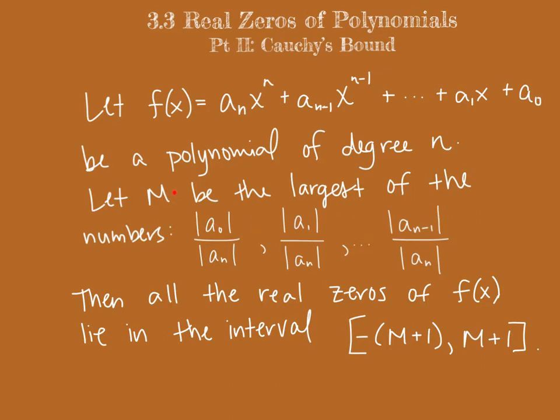Once you determine M, M is the largest of all of these fractions that you find, then we can determine the bound. What we do is we add 1 to that M value. And that's our upper bound. And then we put a negative in front of that value. And that's our lower bound. So let's say M was 7. The upper bound would be 8. And the lower bound would be negative 8.